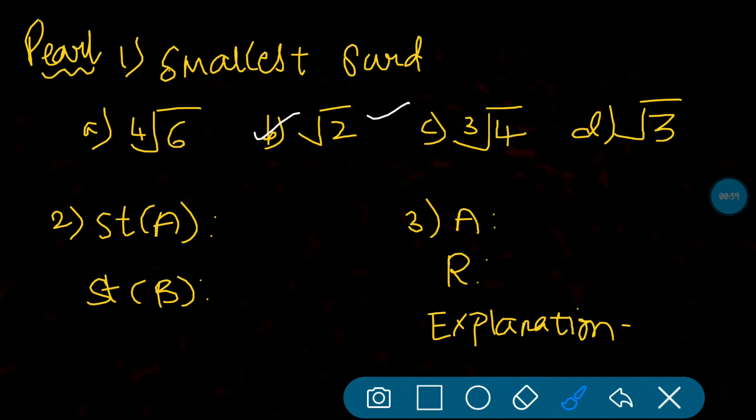Second question, statement type: Statement A - Two surds can be multiplied only when they are of the same order. This one we have discussed multiple times, so this is a true statement. As you all know, when the order of two surds are the same, then only they can be multiplied.